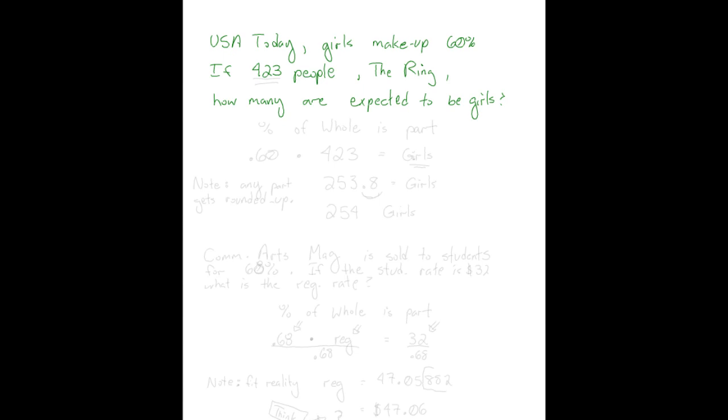Well, the idea, remember, our formula is the percent of the whole is the part. So the percent is 60%, and we're going to convert that to a decimal, so 6 tenths or 60 hundredths of gets translated as a multiplication. The whole, the whole amount, 423 people went. So 423 people is the whole amount is,